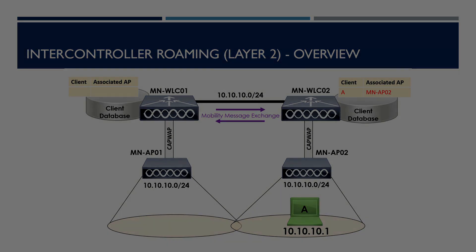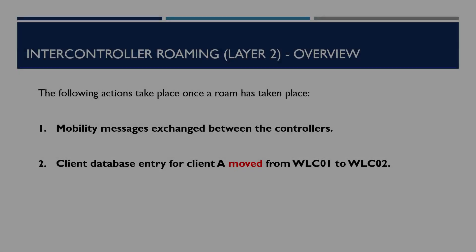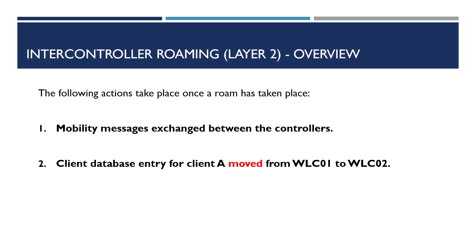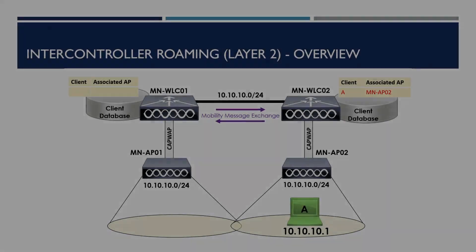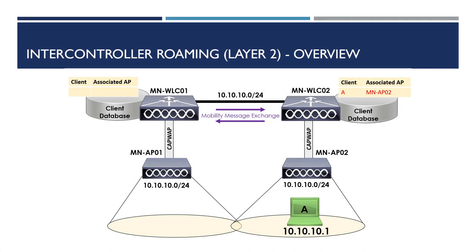When client A roams from AP01 to AP02, an inter-controller roam has taken place. As both controllers and APs are operating on the same layer two subnet, this is classed as an inter-controller layer two roam. When this roam occurs, the following actions take place: first, mobility messages are exchanged between the controllers; and second, the client database entry for client A is moved from WLC01 to WLC02. Importantly, as both controllers are on the same subnet, client A keeps the original IP address 10.10.10.1 without having to request a new one.